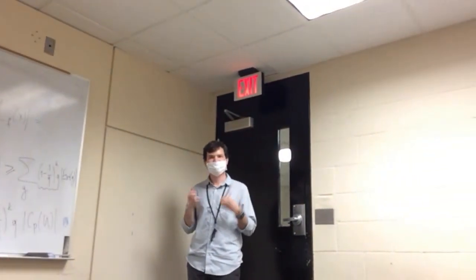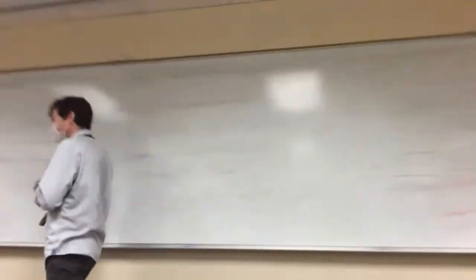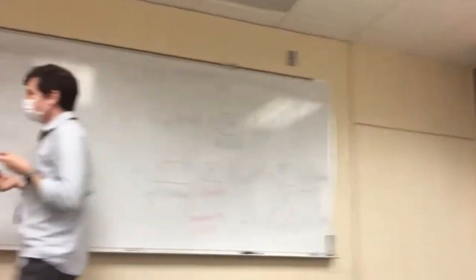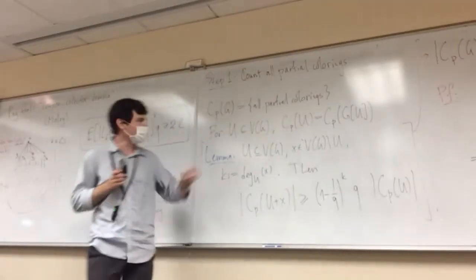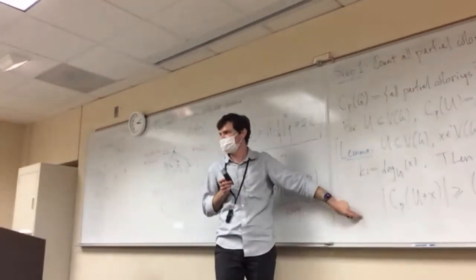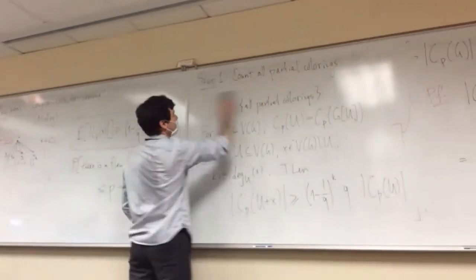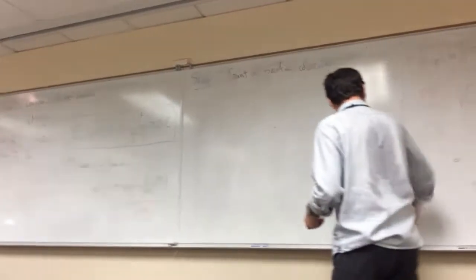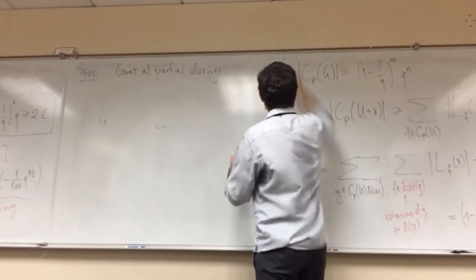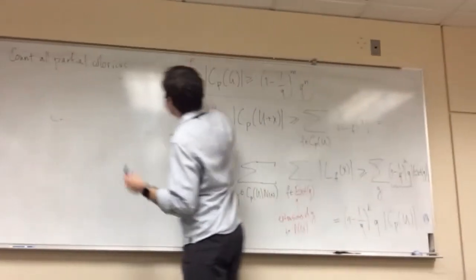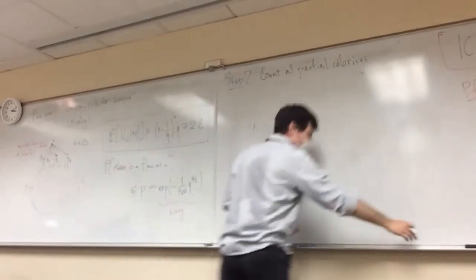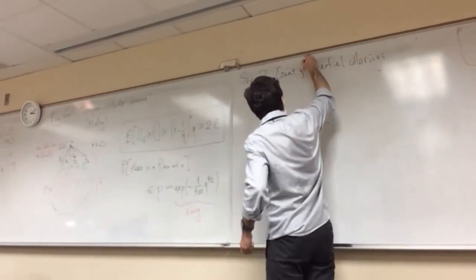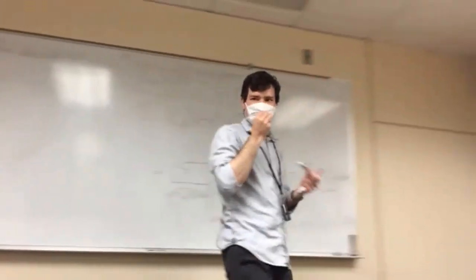Okay, so that wasn't hard. Now step two: count the good colorings. We know the total number of partial colorings — now we count the good ones. This is the key part of the proof. Remember 'good' means a partial coloring without flaws, where a flaw means a vertex is uncolored and either has too few available colors or there is an available color with too high a color degree.